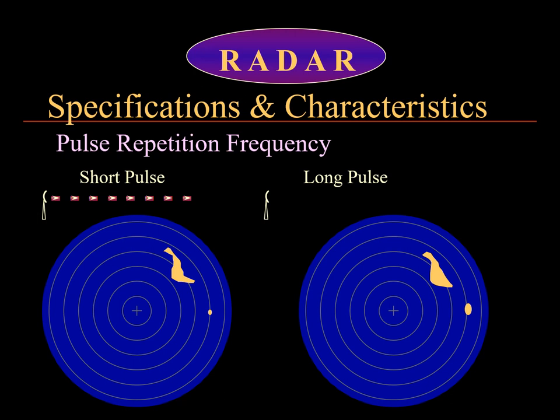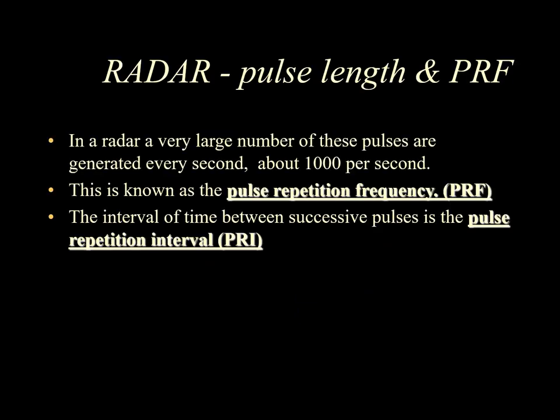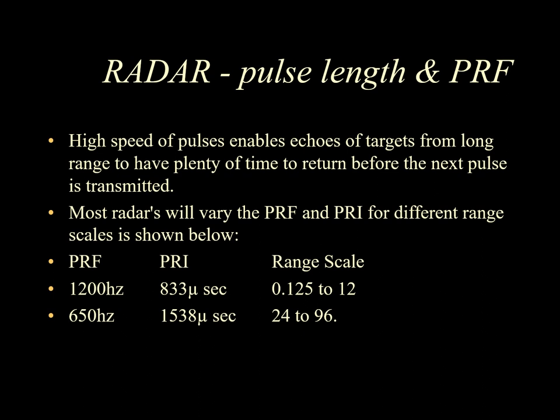The magnetron generates a very large number of pulses every second — about 1,000 per second — which is the pulse repetition frequency. The pulse repetition interval is the time between pulses. The high speed of pulses enables echoes from long-range targets to return before the next pulse is transmitted. Understanding the pulse repetition frequency, pulse repetition interval, pulse length, and amplitude of the pulse is key to understanding how targets are detected by marine radar.